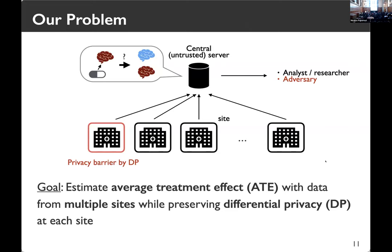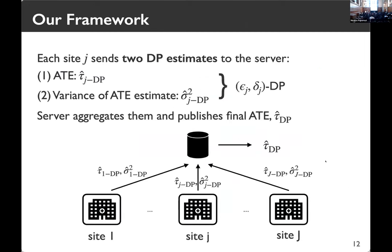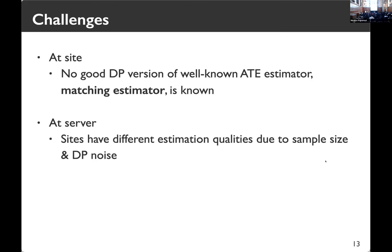We formalize the goal as estimating ATE based on data from multiple sites while guaranteeing differential privacy at each site — meaning everything that goes out from one hospital should be differentially private. More specifically, each site sends two differentially private estimates to a central untrusted server: one is the ATE estimate, and the other is the variance of their ATE estimate. The variance accounts for both variance due to sampling and due to differential privacy noise. The central server then aggregates the noisy estimates from all sites to publish the final DP-ATE estimate.